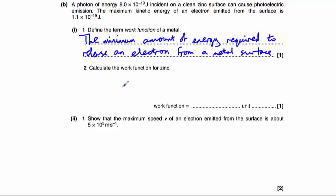And part two asks us to calculate the work function for zinc. So the equation we have is hf equals phi, the work function, plus the maximum kinetic energy. Now, E equals hf, and we know that the energy of the incident photon is 8 times 10 to the minus 19. So we can rearrange this equation.